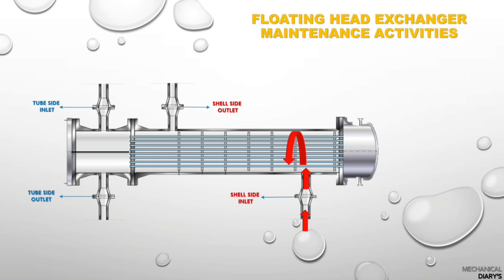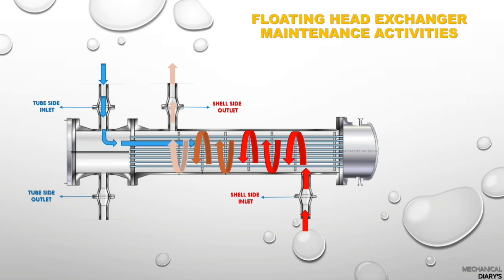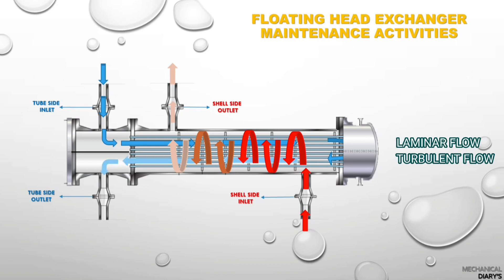Finally, confirm with operations that the equipment is running normally — if so, the maintenance activity is completed. One of the most important questions is: why is the floating head exchanger used in refineries? The answer relates to flow types. In every exchanger there are only two types of flow: laminar flow and turbulent flow.